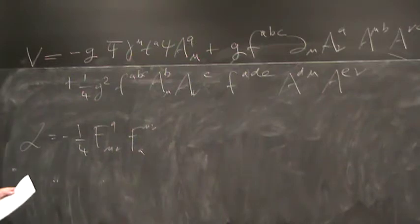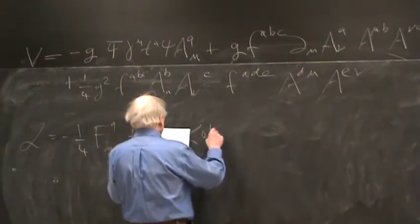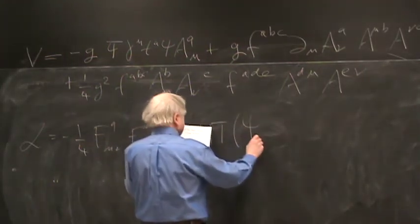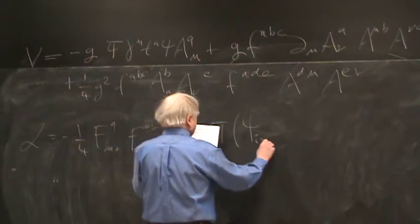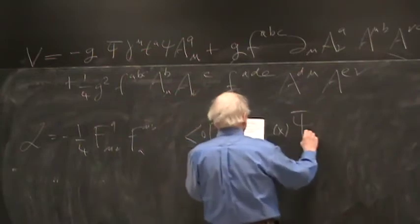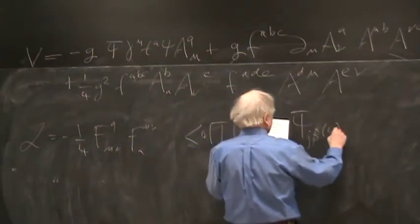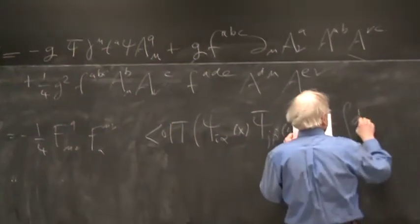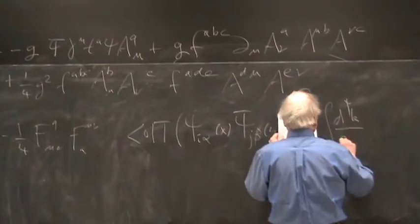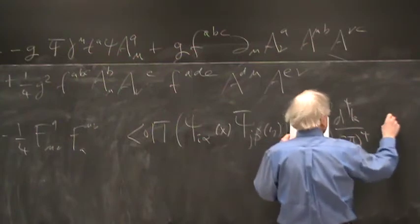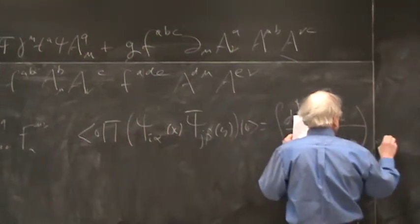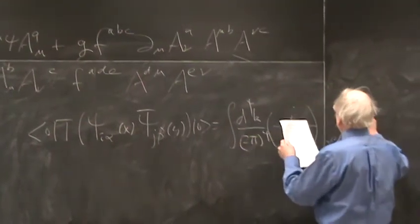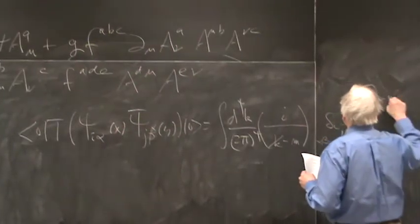Now the fermion propagator is very much the same. It's psi I alpha of X psi bar J beta of Y is integral d fourth k over two pi to the fourth, i over k slash minus m alpha beta delta ij, e to the minus ik dot x minus y.